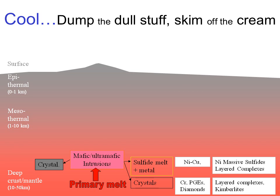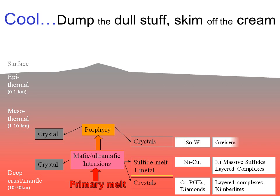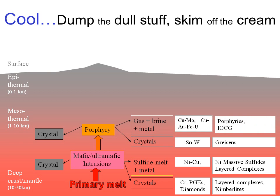As we continue up into a shallower area we enter the porphyry domain. As the magma continues to cool it drops out crystals — this time usually of feldspars and quartz — concentrating the metals we want into either the remaining melt or into the gases and salty brines that come out as they cool. Predominant among these are copper and molybdenum, and secondarily gold, iron, and uranium. The porphyry deposits and the IOCGs — iron oxide copper gold deposits — belong to this group.